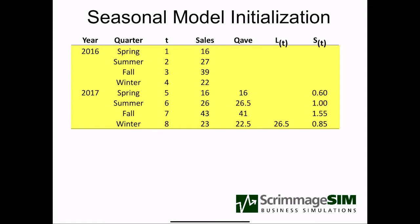To initialize a seasonal model, we're going to need two years worth of data. In this example, we're going to use a quarterly seasonal model. For planning purposes, it's probably more realistic to use a monthly model — you wouldn't want to use a model with more detail than that in general. We're using a quarterly model just because of space considerations in the presentation, and it makes the math and the example a little easier.